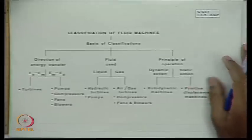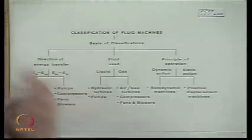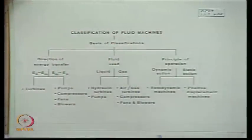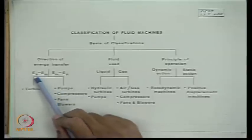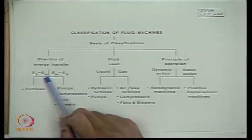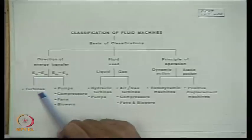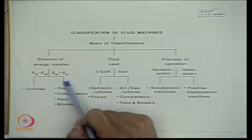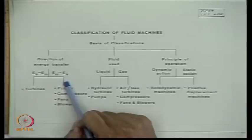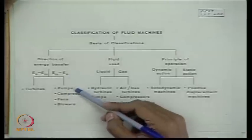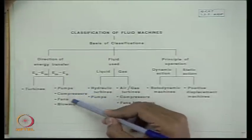Direction of energy transfer: in fluid machines, either the stored energy is converted to mechanical energy, or mechanical energy is converted to stored energy of fluid. The machines in which stored energy in fluid is converted to mechanical energy — where the output is mechanical energy — are termed as turbines. The machines where mechanical energy is the input and is converted to stored energy in the fluid are termed as pumps, compressors, fans, and blowers.